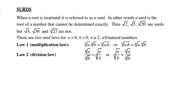There are two surd laws, and of course a must be greater than 0, b must be greater than 0, and n must be greater than or equal to 2, where n is a natural number. Look at the first law, called the Multiplicative Law: if you multiply two surds of the same type, then you can write a and b under the same surd.